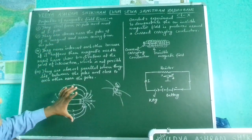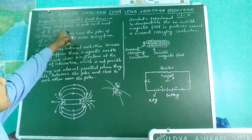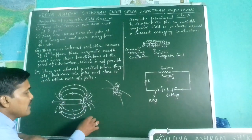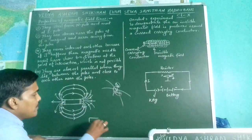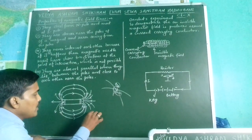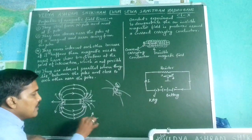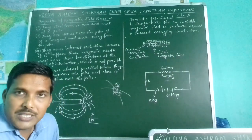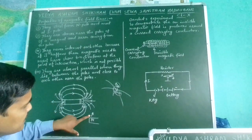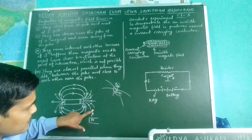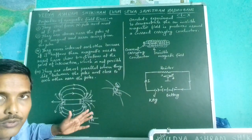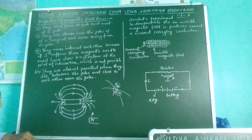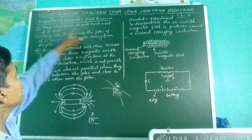The first feature is: they start from the north pole and meet at the south pole. If we bring a magnetic needle near the north pole, it will attract its tail — because the tail is the south end and opposite poles attract each other. So the tail gets attracted towards the north pole, while the arrow end remains away, and that is why the needle aligns in such a manner — showing that field lines start from the north pole and meet at the south pole.